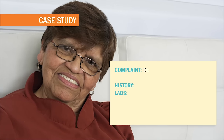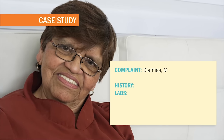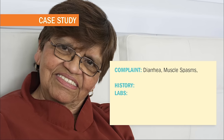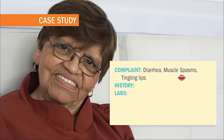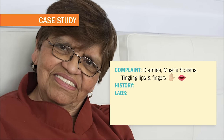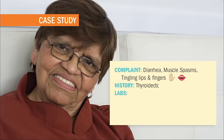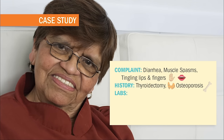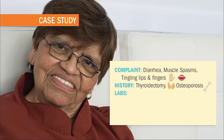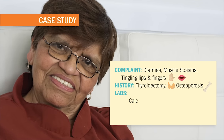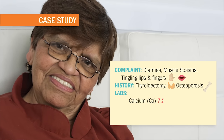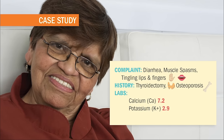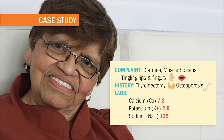Let's get to it. Maria is a 74-year-old female presenting with complaints of diarrhea three times a day, muscle spasms, and tingling of the lips and fingers. She has a history of thyroidectomy and osteoporosis. Upon reviewing her labs, the nurse finds a serum calcium level of 7.2, potassium of 2.9, and a sodium level of 125.